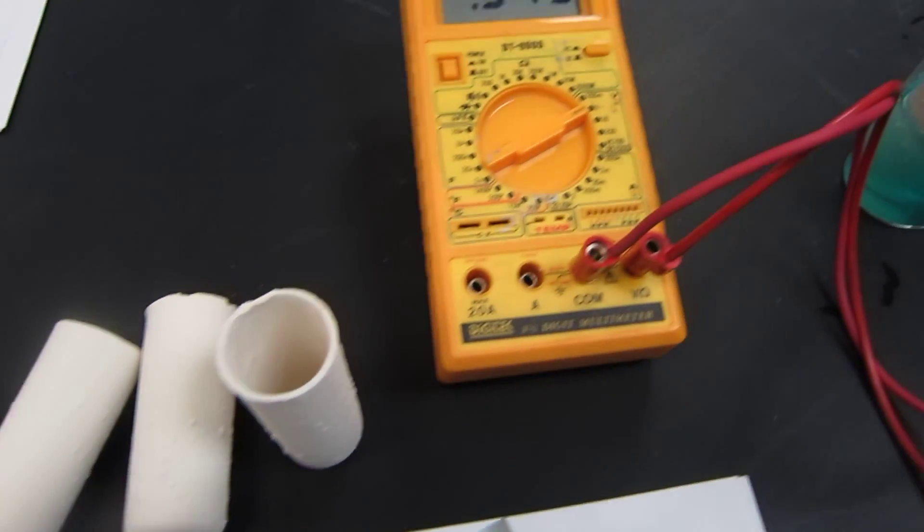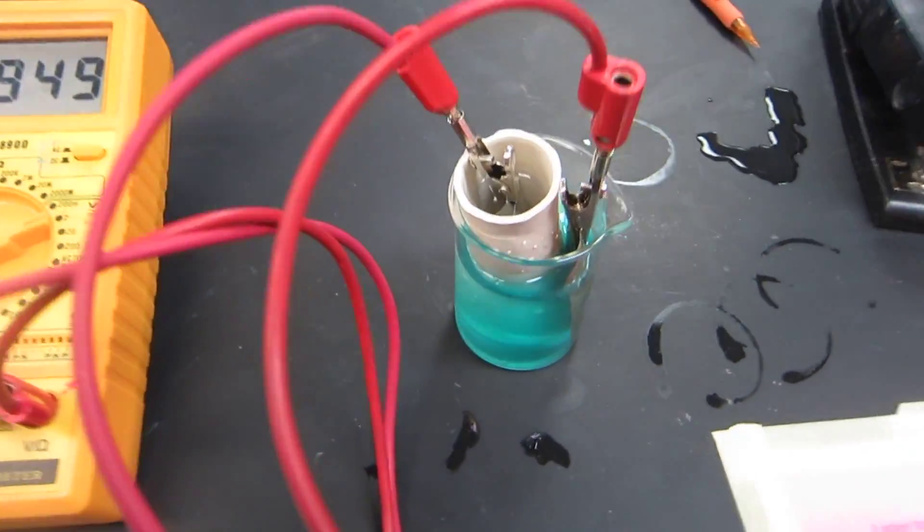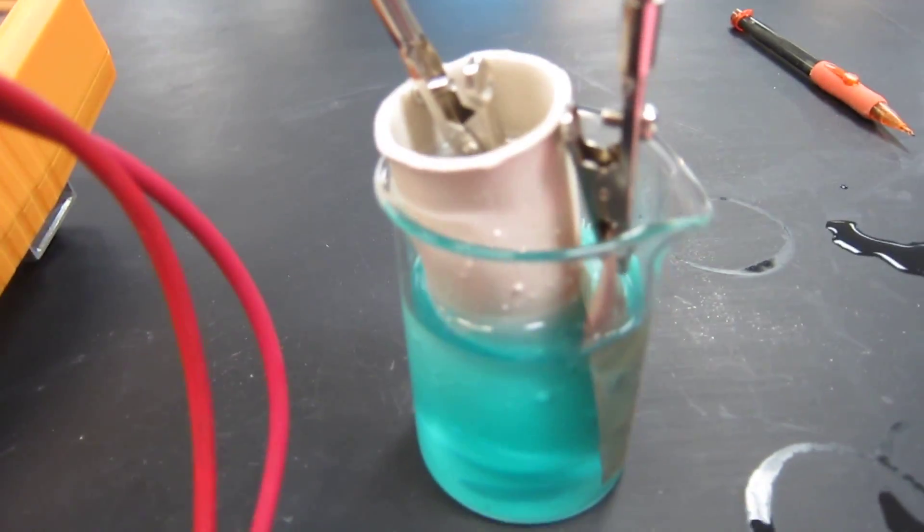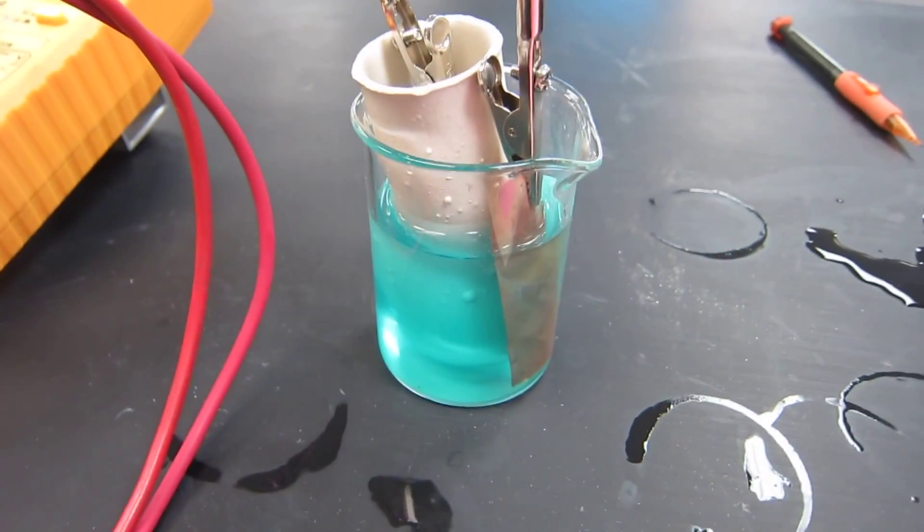The reagents required for this experiment are zinc sulfate, which should be 1 molar concentration, and you add it into the porcelain cup which holds the zinc electrode. This is the anode.